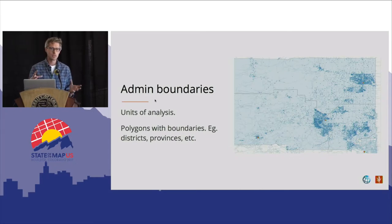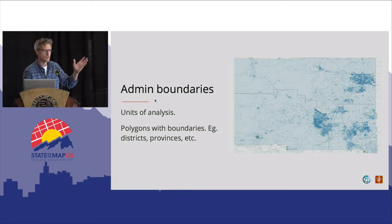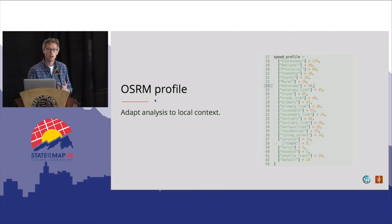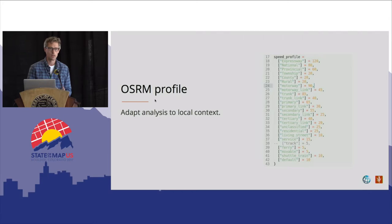Finally, it needs administrative boundaries — these are the units of analysis. For example, I pulled commissionary districts here in Boulder County. The platform also needs an OSRM profile. Most importantly, the speed profiles allow you to adapt the analysis to local context — setting speeds for primary highways, secondary roads, etc. If your dataset uses a different classification, you can adapt the profile accordingly.